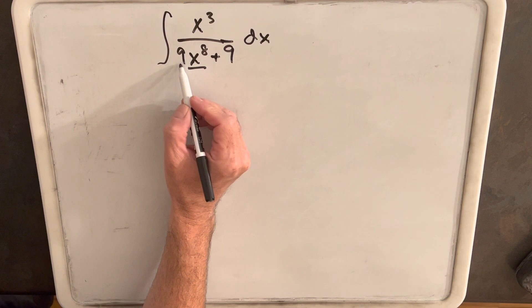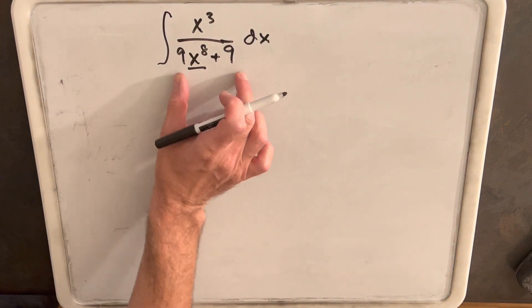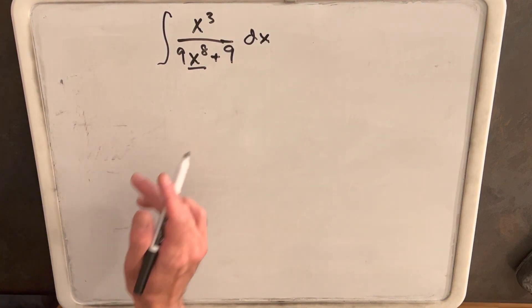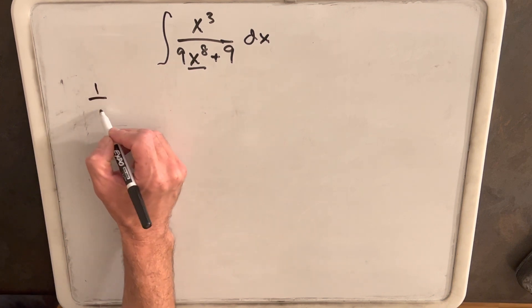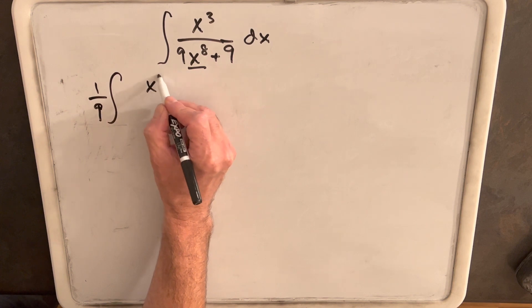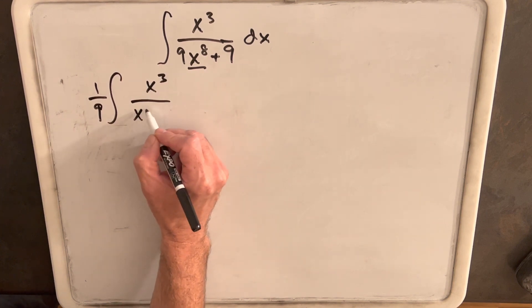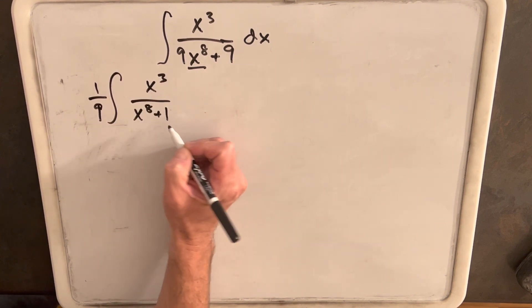So, to start with what I'm going to do, I just want to factor out this nine. I think because we have a nine here and a nine here, that's just kind of clogging things up. So, we'll factor that out as a one-ninth, and so we'll have one-ninth x cubed over x to the eighth plus one.